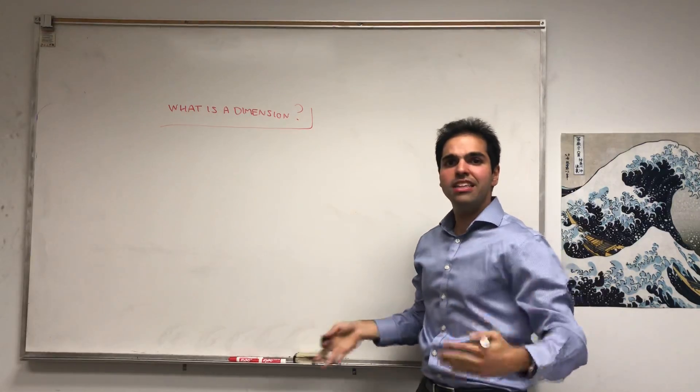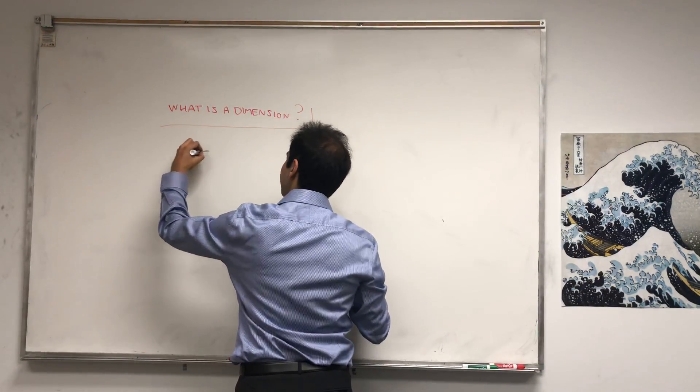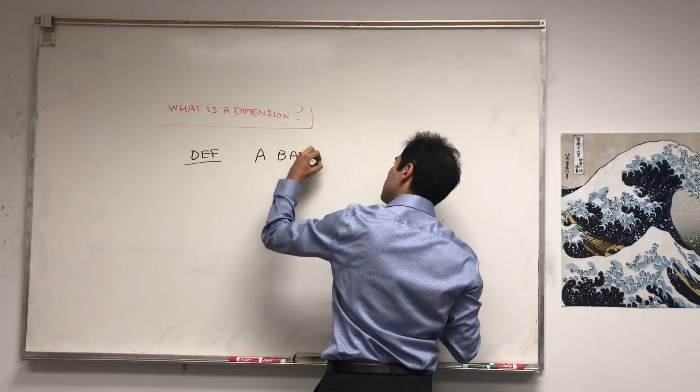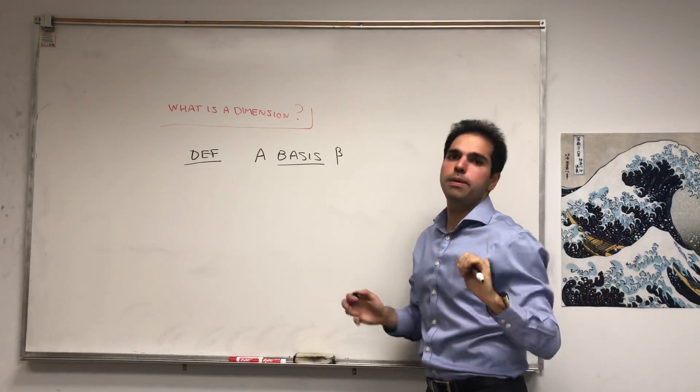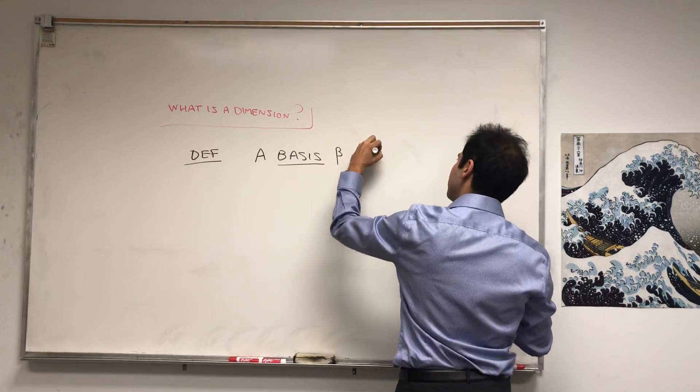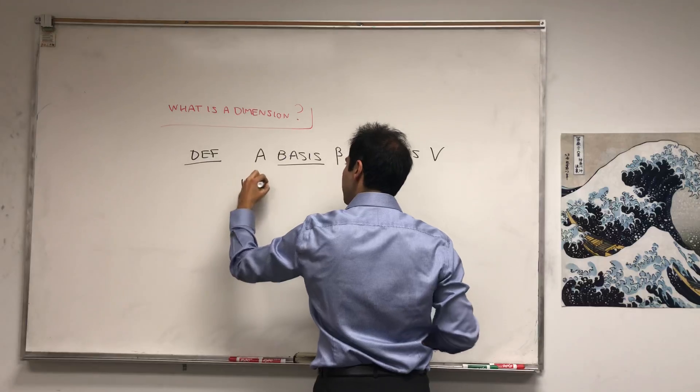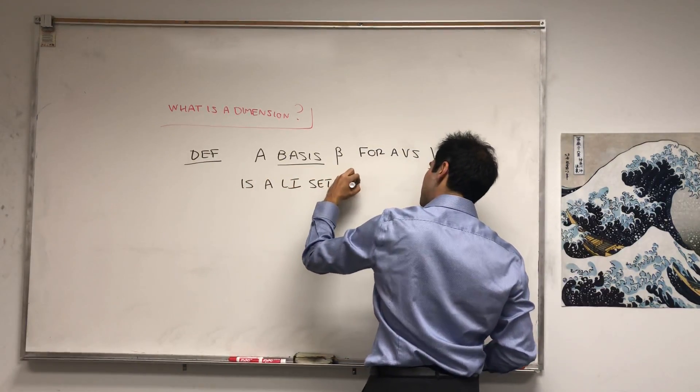And in linear algebra this is what's called a basis. So just a quick definition: a basis beta, technically for a vector space V, is simply a linearly independent set that spans V.